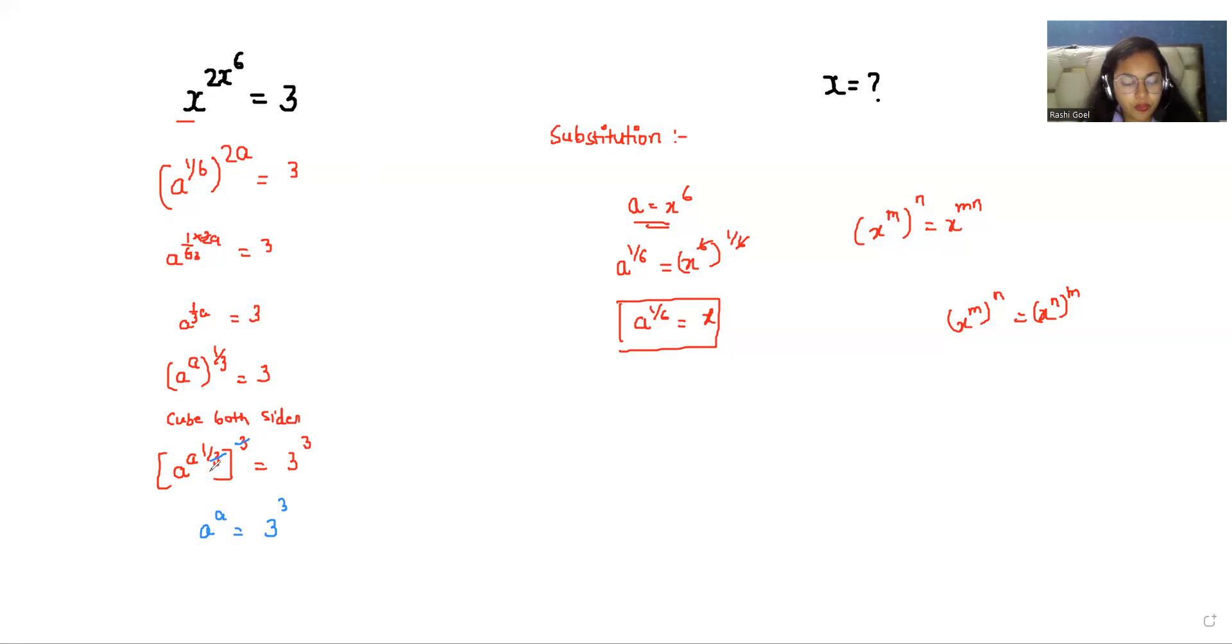So the value of A is x^6. So in place of A we can write 3. So 3 equals x^6.